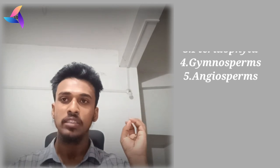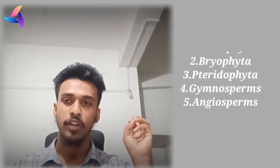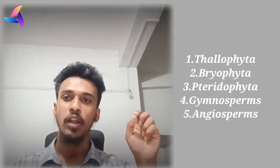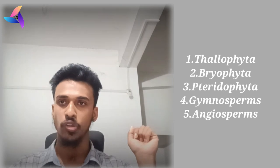The plant kingdom has been classified into five subgroups according to the above-mentioned criteria — plant body, vascular system, and seed formation. On this basis, the five subgroups of plant kingdom are: number one, Thallophyta; number two, Bryophyta; number three, Pteridophyta; number four, Gymnosperm; and number five, Angiosperm.